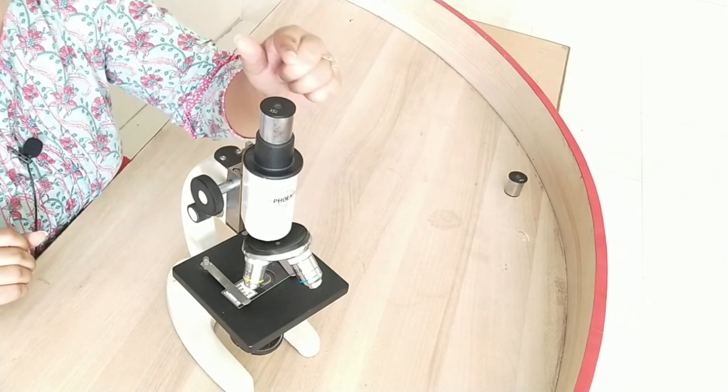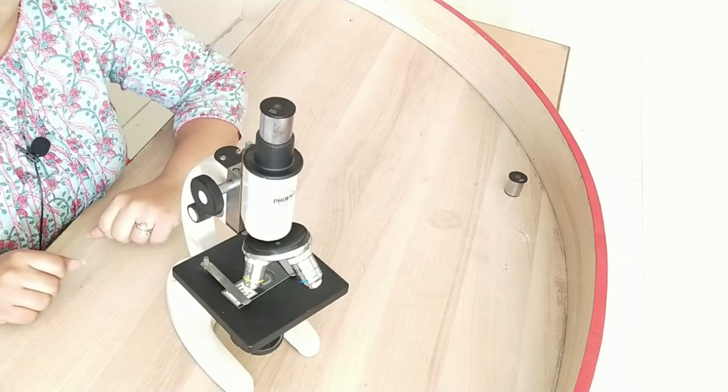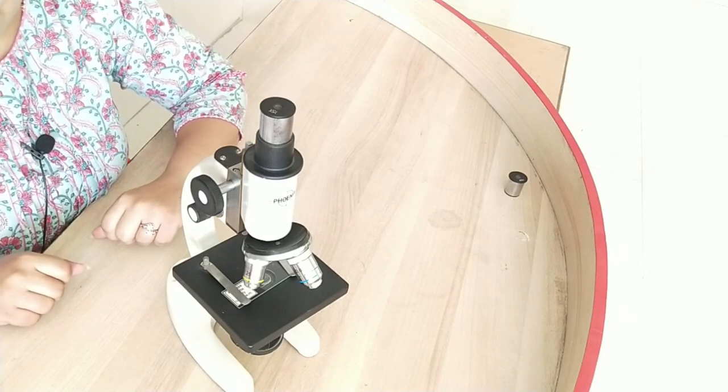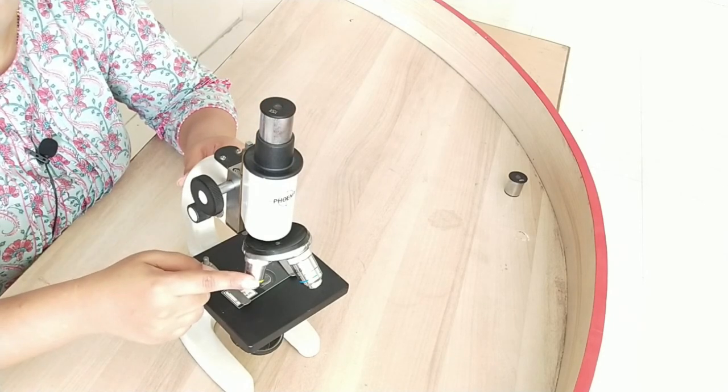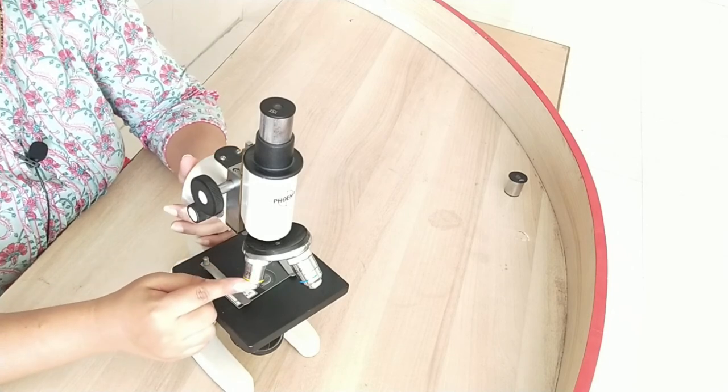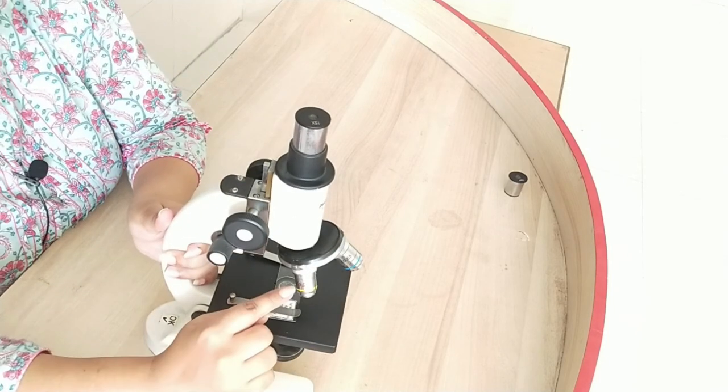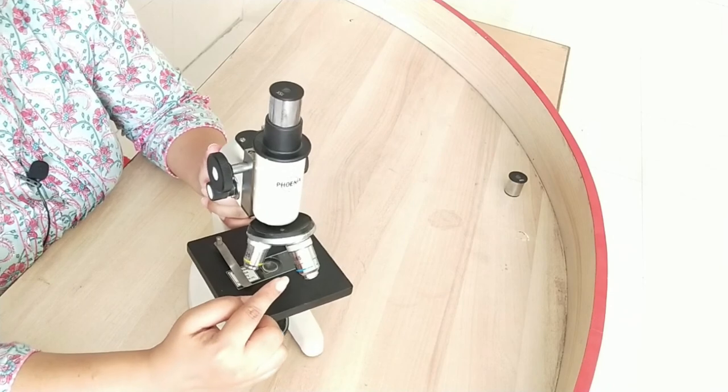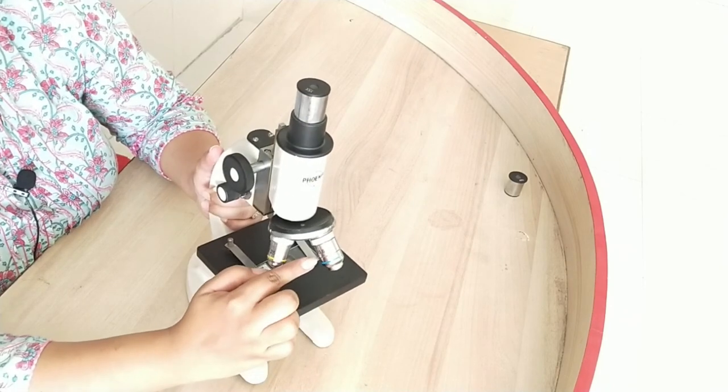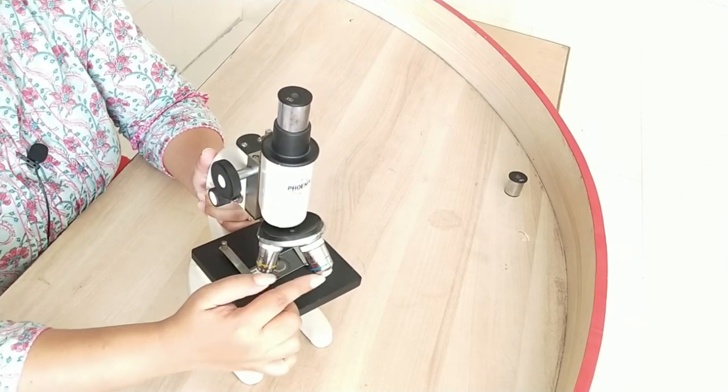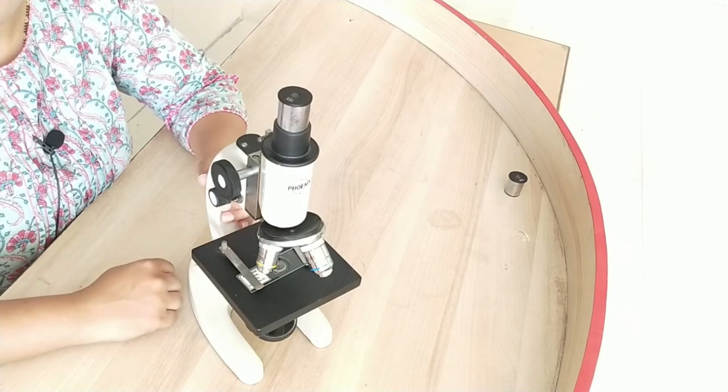We use them according to our requirements. Now here on the objective lenses also you can see some markings. Here it's mentioned 10 and on this it's mentioned 45. These are the magnification parts of the objective lenses.